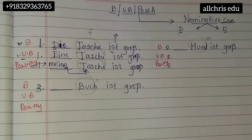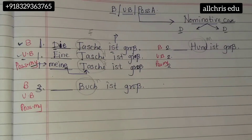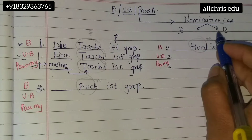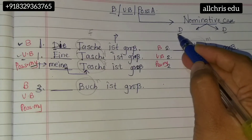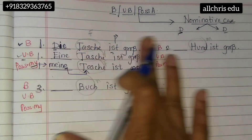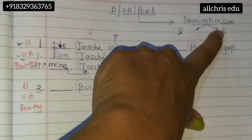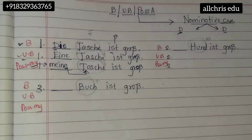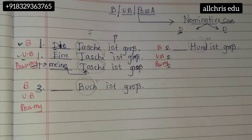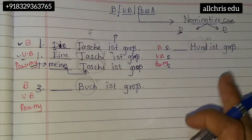Children, last time we saw the nominative case. As I told you, there are two definitions of nominative. We already did about the description and gave some examples. Now let's go for the other D. Nominative case has two definitions — two types of sentences are there in it.